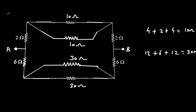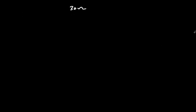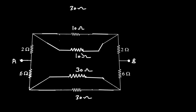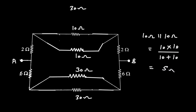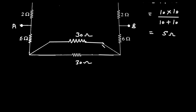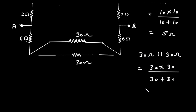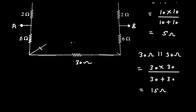Now this 10 ohm in parallel with 10 ohm: 10 into 10 divided by 10 plus 10 equals simply 5 ohm. So we can replace this by 5 ohm. And here this 30 ohm in parallel with 30 ohm: 30 into 30 divided by 30 plus 30 equals simply 15 ohm. So we can replace this by a single resistance of 15 ohm.